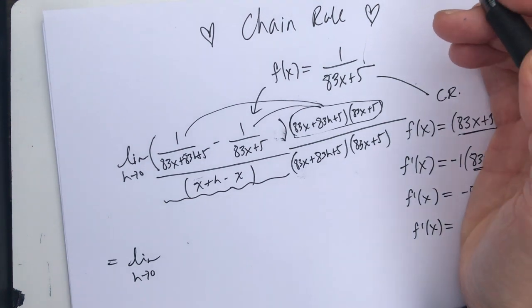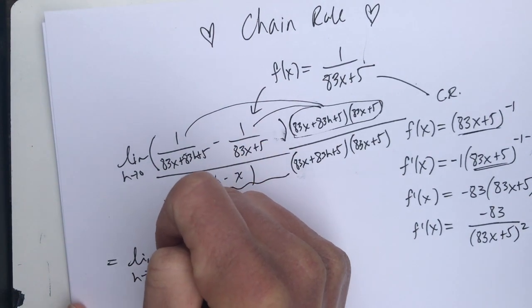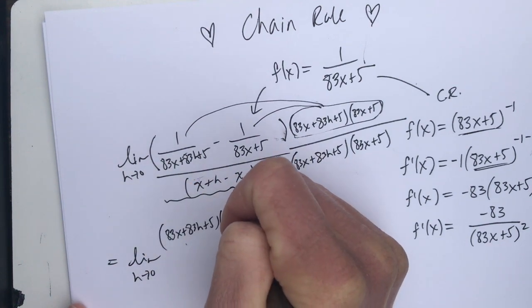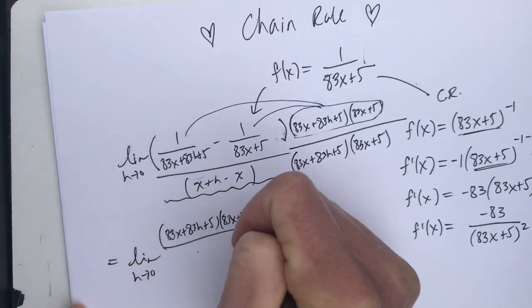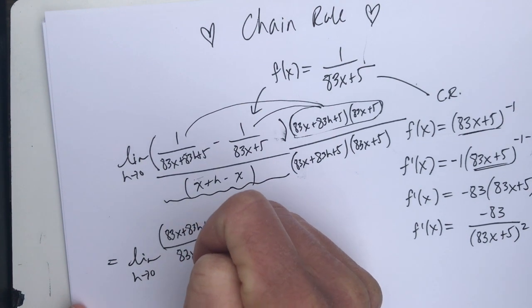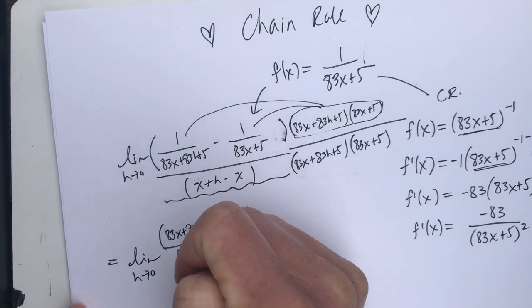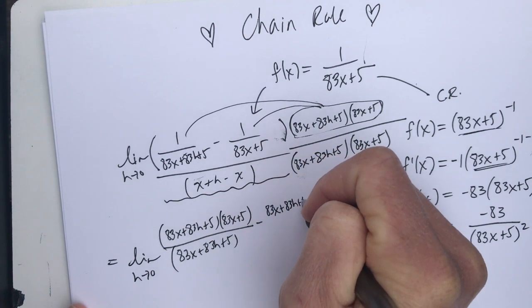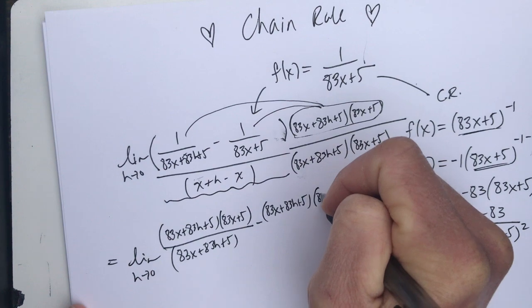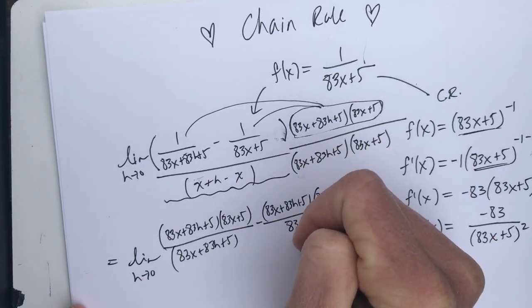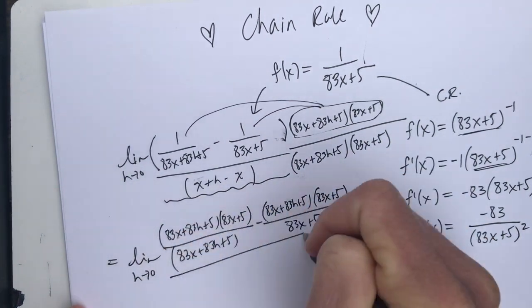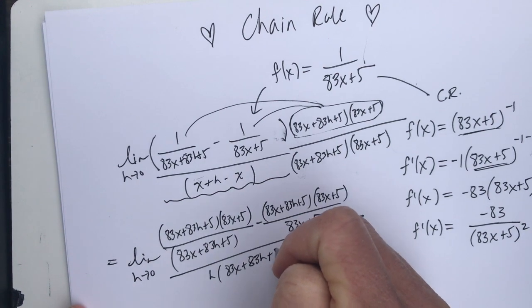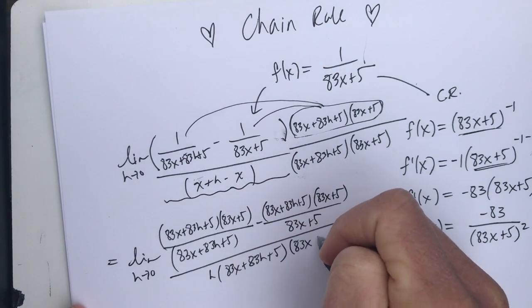So I'll write it all out. So I do 83x plus 83h plus 5 times 83x plus 5 all over the first term, the 83x plus 83h plus 5, minus, distribute again, 83x plus 83h plus 5 times 83x plus 5 all over my denominator, which is just an h times 83x plus 83h plus 5 times 83x plus 5.